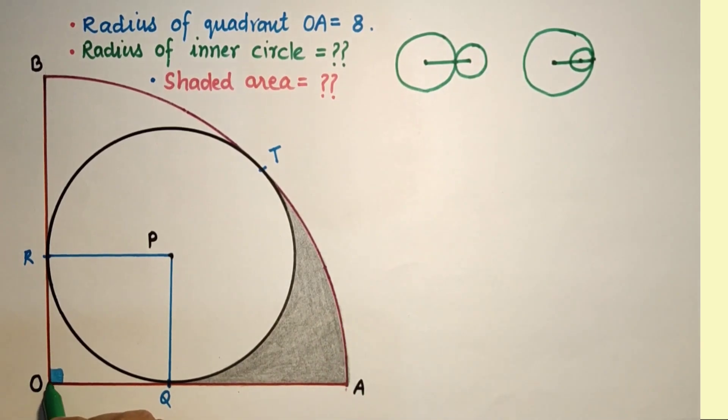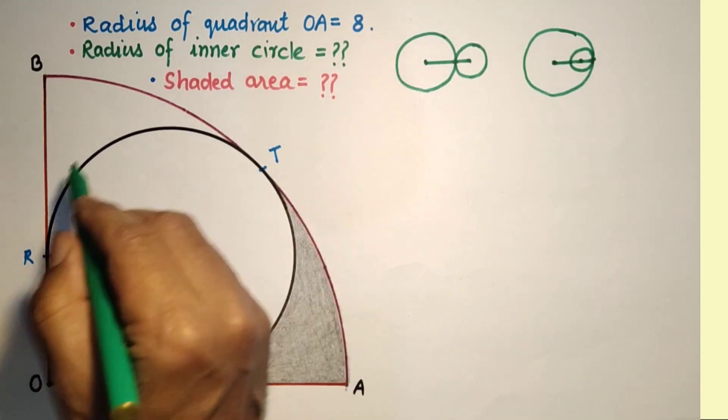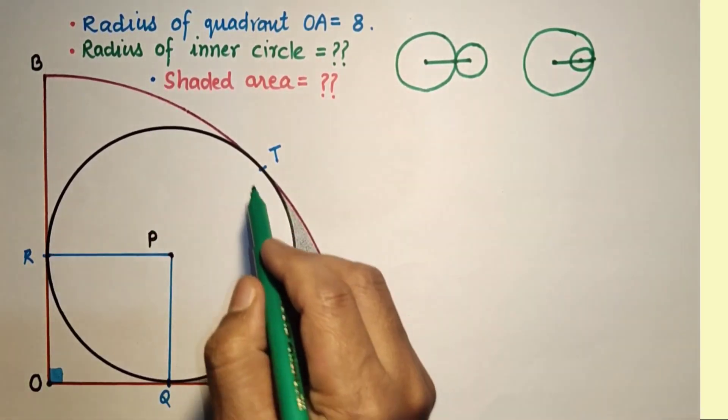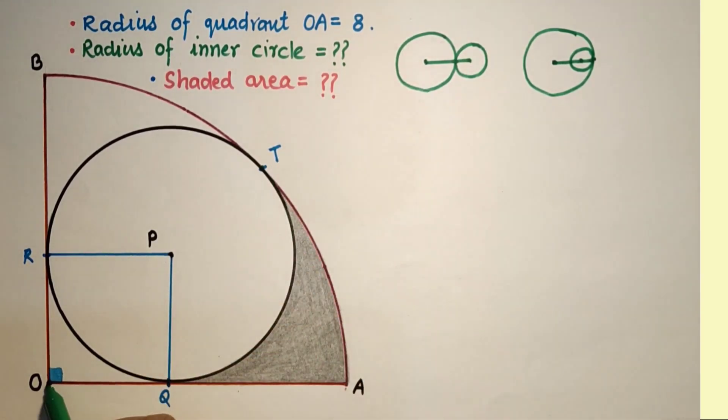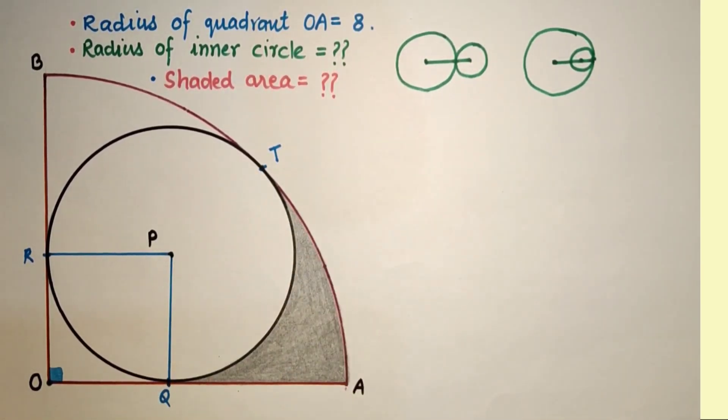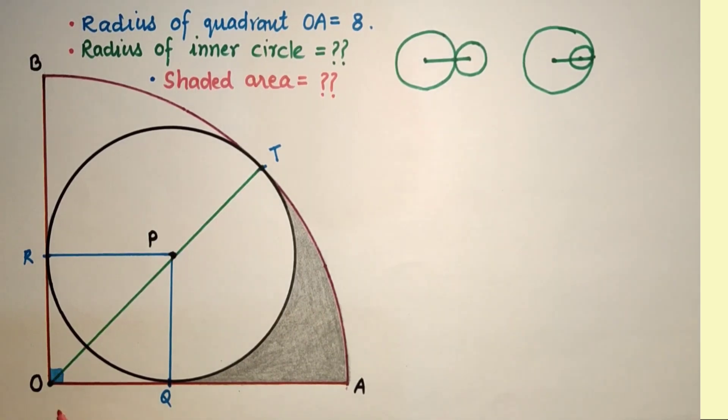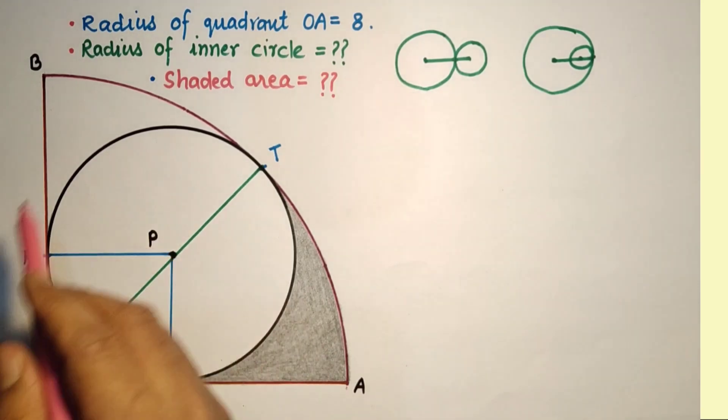In the same way, this is the center of the quadrant, this is the center of this circle. This circle touches this quadrant at this point. So these two centers and point of contact will lie in a straight line. So if we join OT, it will pass through point P, which is the center of the circle.